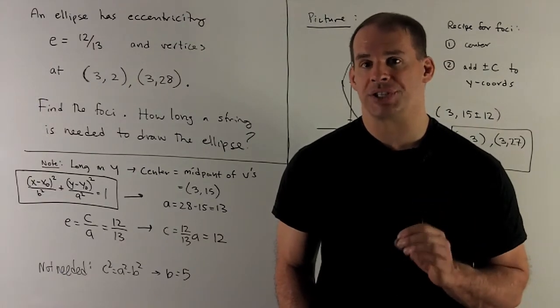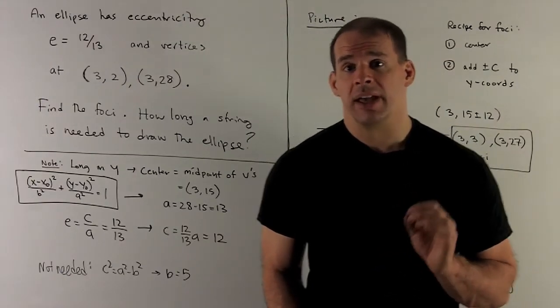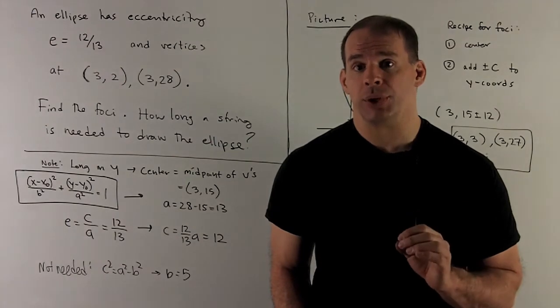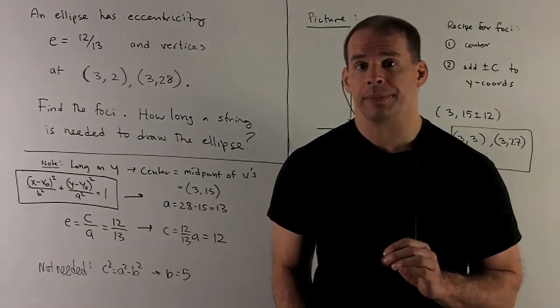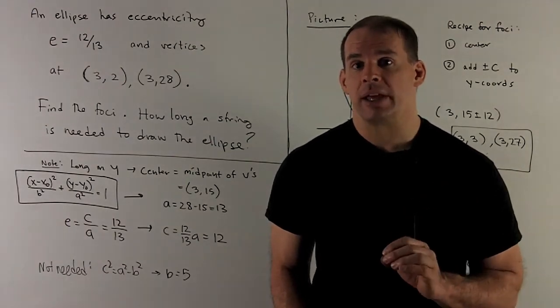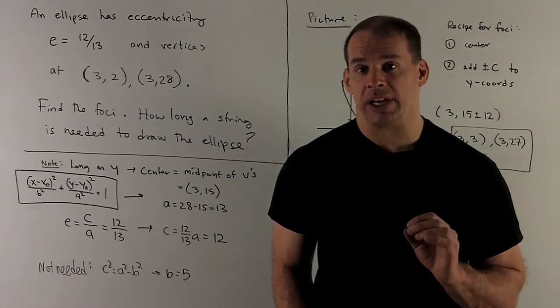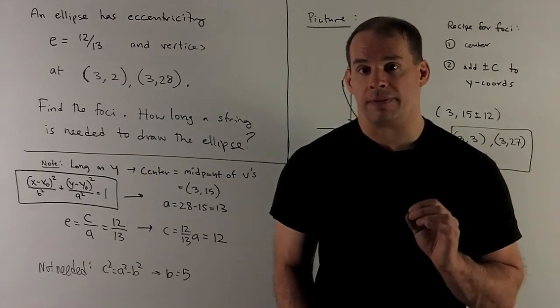An ellipse has eccentricity 12/13 and vertices at (3,2) and (3,28). Find the foci of the ellipse and find the length of string needed to draw the ellipse off of the foci.